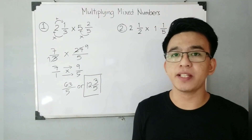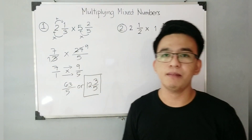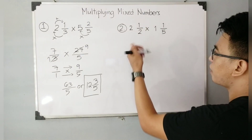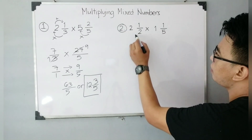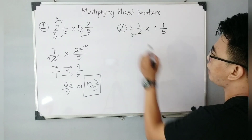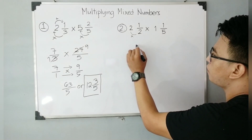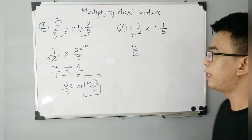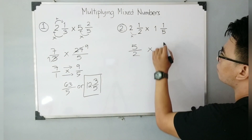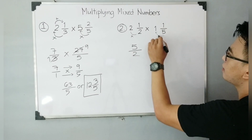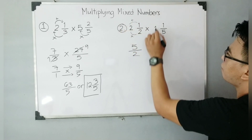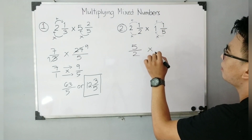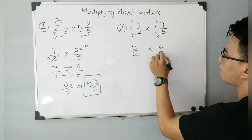I hope you got the process for multiplying mixed numbers. Let's continue with example number 2. For example number 2, convert into an improper fraction. 2 times 2 is 4, plus 1 gives you 5 over — copy the denominator — 2. So that gives you 5 over 2. And for the second mixed number, convert again: 5 times 1 is 5, plus 1 gives you 6 over 5.